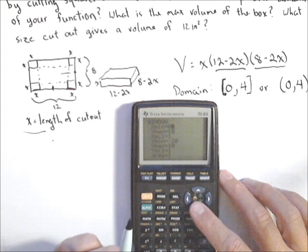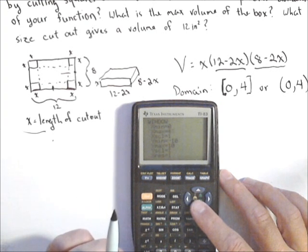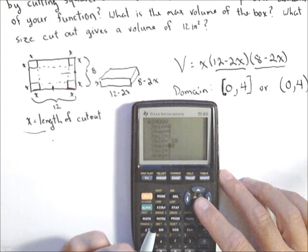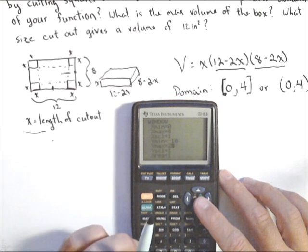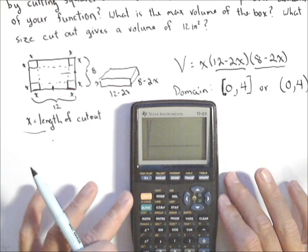We know that our domain is just from zero to four, and we saw that our y max wasn't quite high enough. So let's try something. Let's try 25 and see if we see our whole graph now.